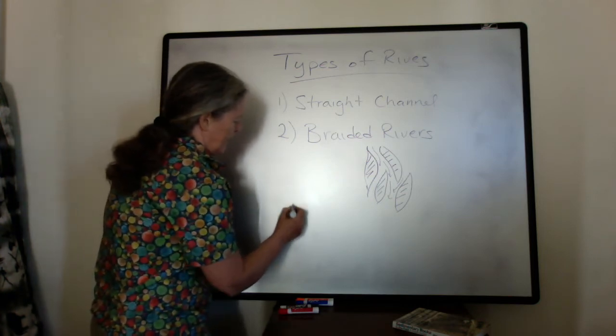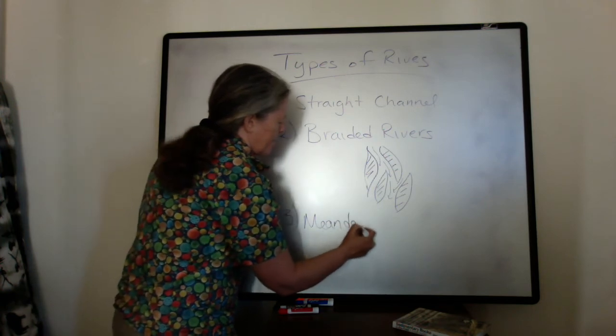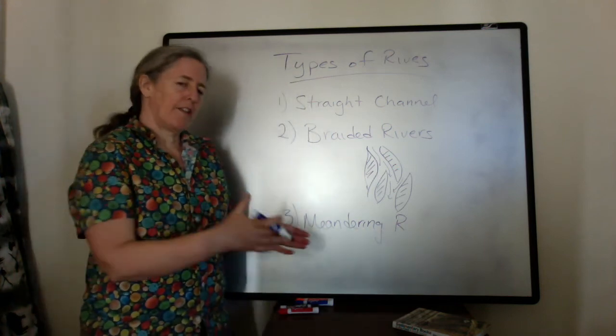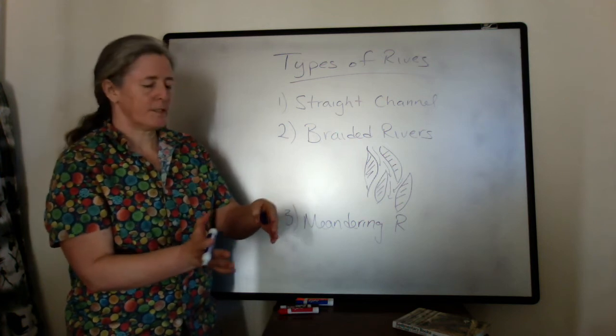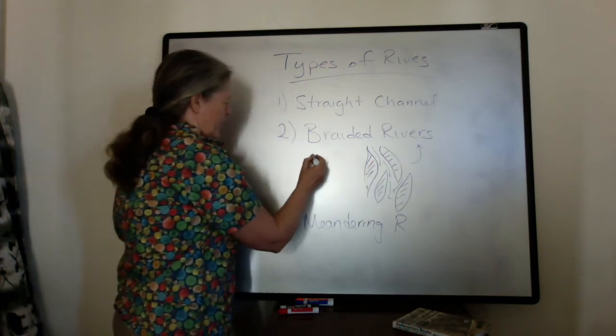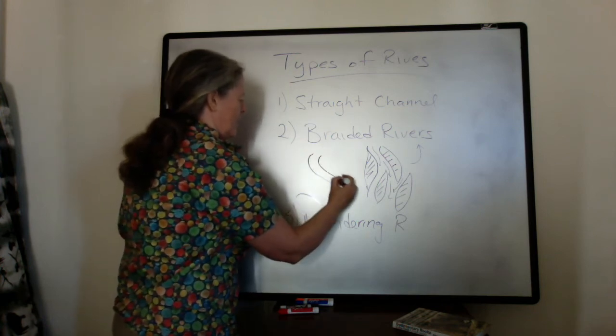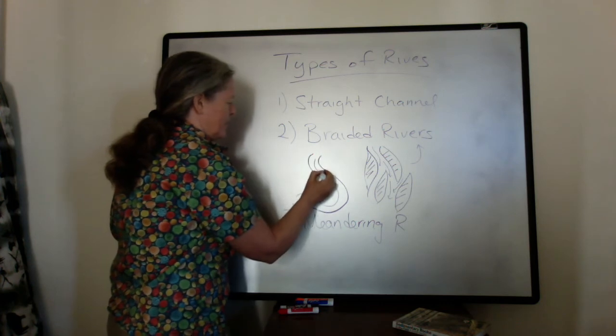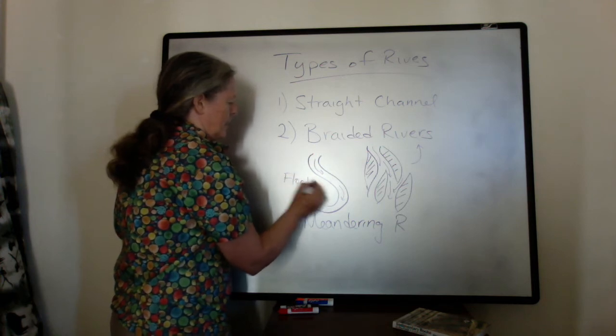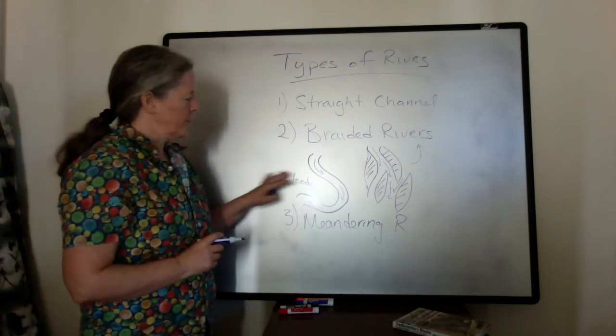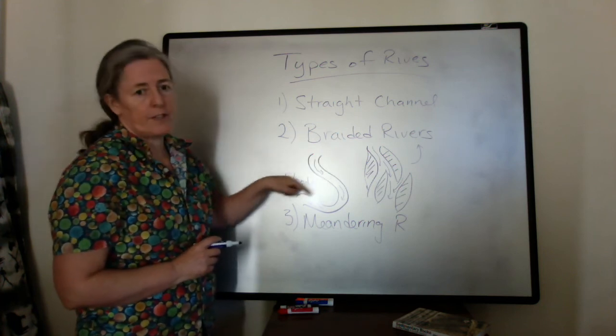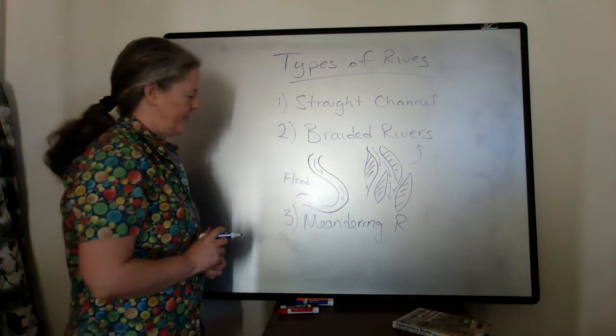A third type, meandering rivers. These are usually single channeled and the channels themselves curve and meander back and forth. Meandering rivers are very common once most of the bed load is deposited. To get these meanders, you have to have a very low slope. If you have a steep slope, the river will just tend to go straight down.